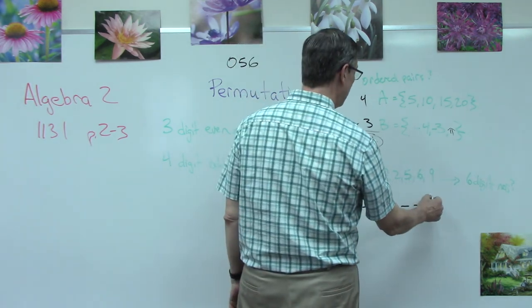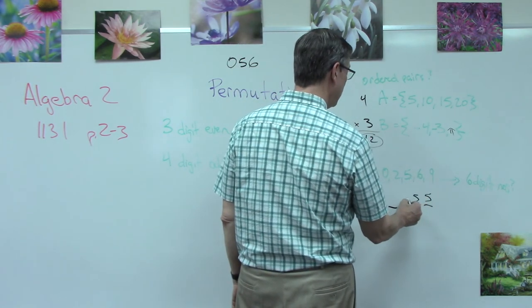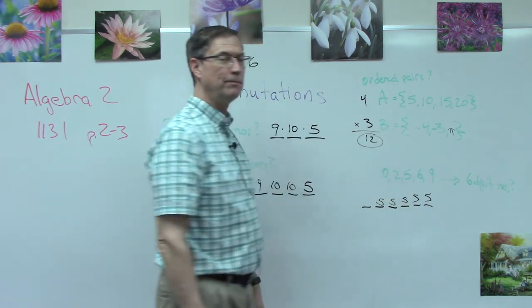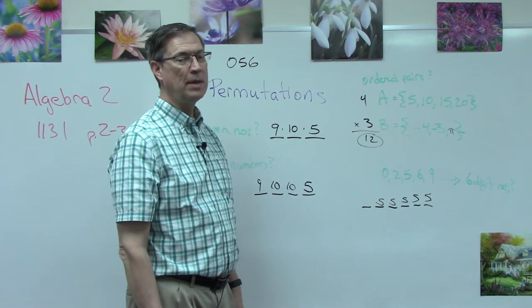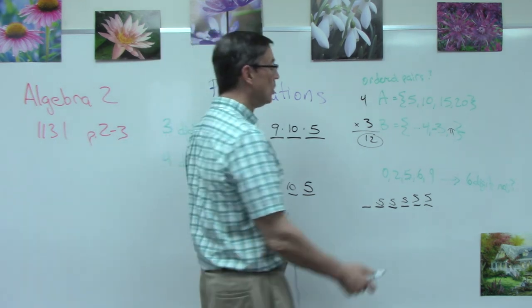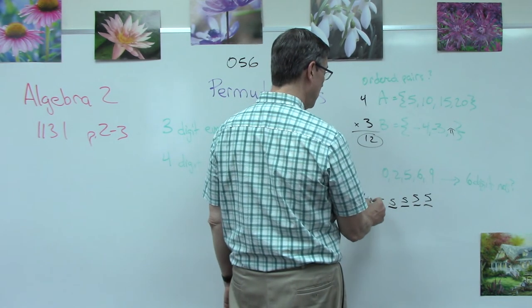Can I have zero as the first digit? No. That would not be a legitimate six-digit number. So of these five numbers, only four of them work to go there.